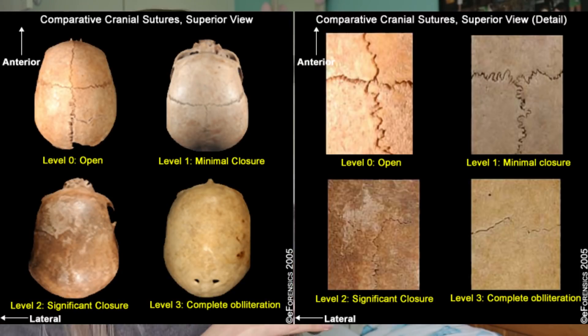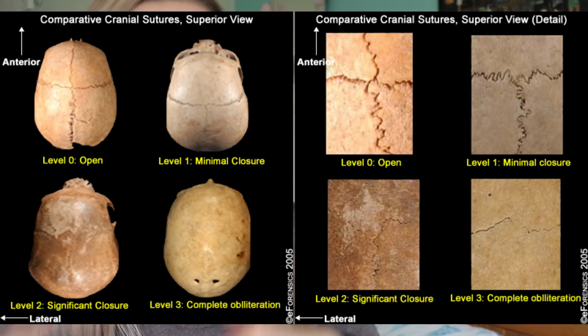Basically the stages go from completely unfused to complete obliteration — when it's completely locked together. Complete obliteration does tend to happen between 36 and 75 years, which is a big age gap. So once you get over 35 with this method, it's not particularly accurate. You really need to look at the other elements of the skeleton, which to be honest are probably better to look at first anyway.